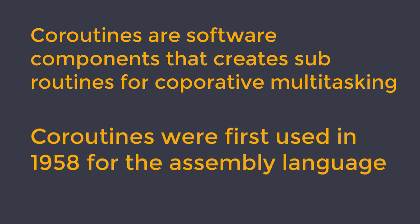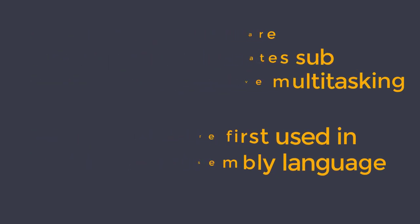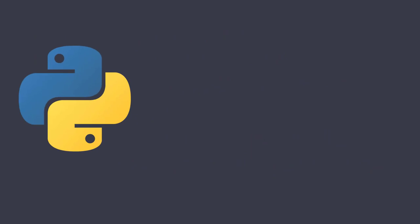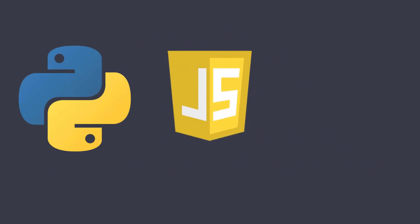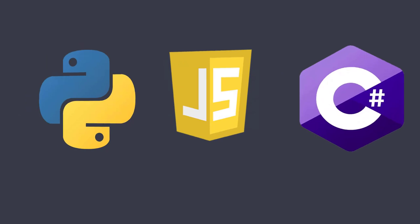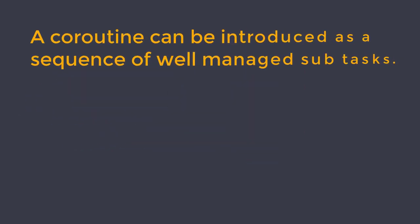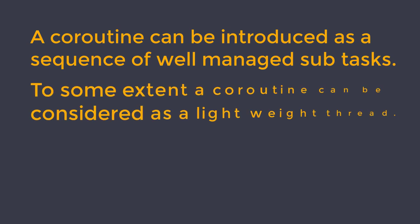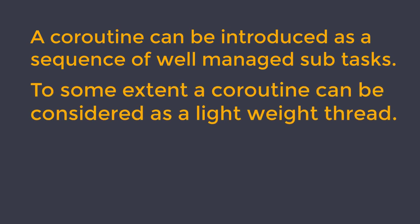Coroutines were first used in 1958 for assembly language. Developers of modern programming languages such as Python, JavaScript and C# have been using coroutines for many years. In Kotlin, a coroutine can be introduced as a sequence of well-managed sub-tasks. To some extent, a coroutine can be considered as a lightweight thread.